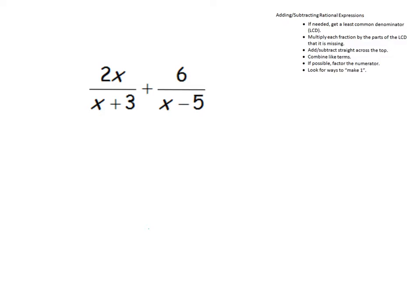Let's take a look at this first example. Remember, the steps that you wrote in your notes are what we're going to follow. If needed, get a least common denominator. In order to add these two fractions, we need to have a common denominator, and we do not have that right now. So we're going to first find an LCD. My least common denominator — the first thing you do is factor each denominator. Notice this is completely factored, and so is this. You can put parentheses around x plus 3 and x minus 5 to remind yourself that those are binomial factors. We're going to list every factor of the first denominator, which is x plus 3, and then include any other factors of the second denominator that we haven't written down already, which is x minus 5. So there's our LCD.